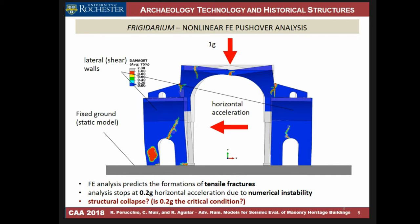Doing finite element analysis of this type of structure is quite demanding — in part for the geometry, but primarily because of the complexity of modeling the nonlinear behavior of the material. You can do finite element analysis up to a certain point, but you face the problem that when the analysis stops, you really do not know whether you have a true collapse condition or a numerical problem that has stopped the analysis. You may assume collapse but cannot distinguish it from a numerical artifact.